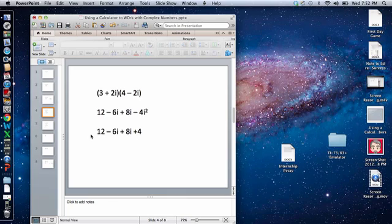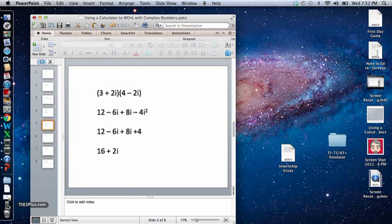Now I'm going to simplify this expression by just combining like terms. 12 and 4 are alike, so 12 plus 4 is equal to 16, and the negative 6i and 8i are alike. When I combine those two I get 2i. So my final answer here is 16 plus 2i. That's a review of how we do that manually.